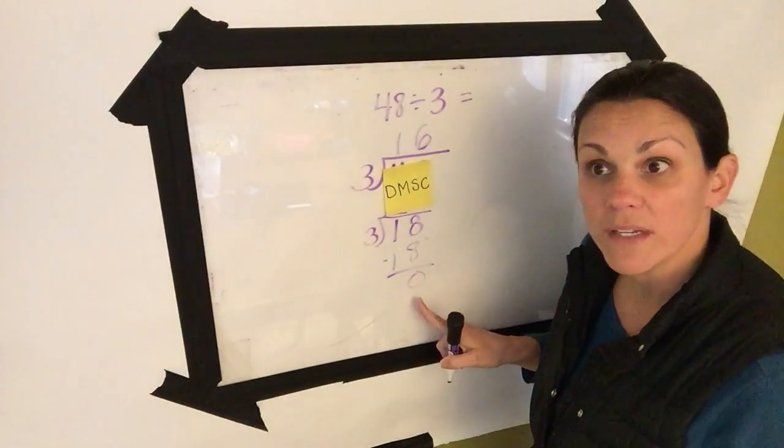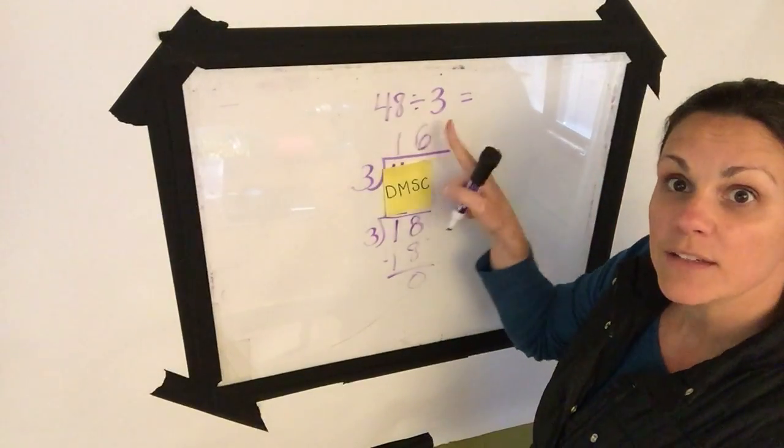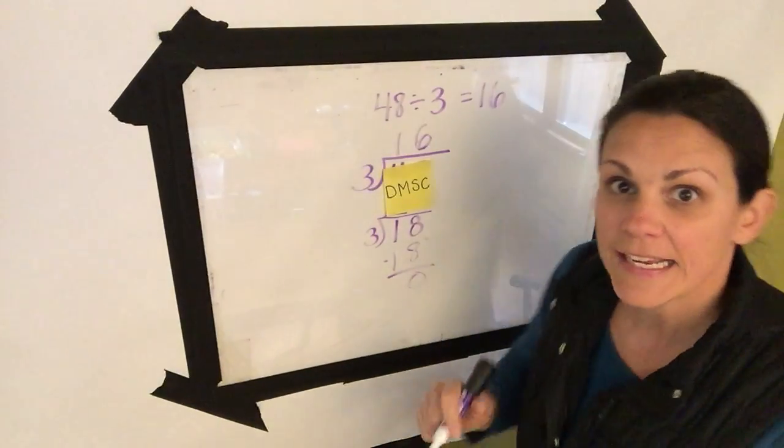None left over. We double check. Is that less than 3? Yes, it is. So 48 divided by 3 is 16. Yes!